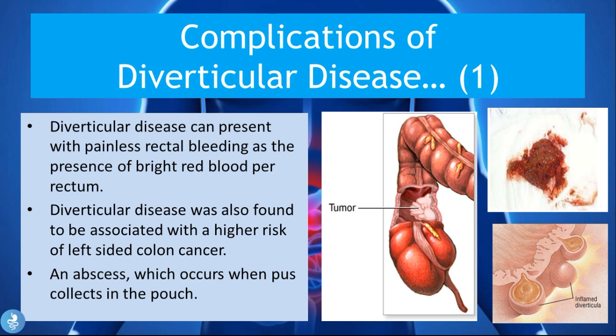Diverticular disease can present with painless rectal bleeding, specifically the presence of bright red blood per rectum. These little pockets tend to bleed, and when they do, the patient will notice fresh bright red blood in their stool when passing a bowel movement. For medical students, this is called hematochezia.